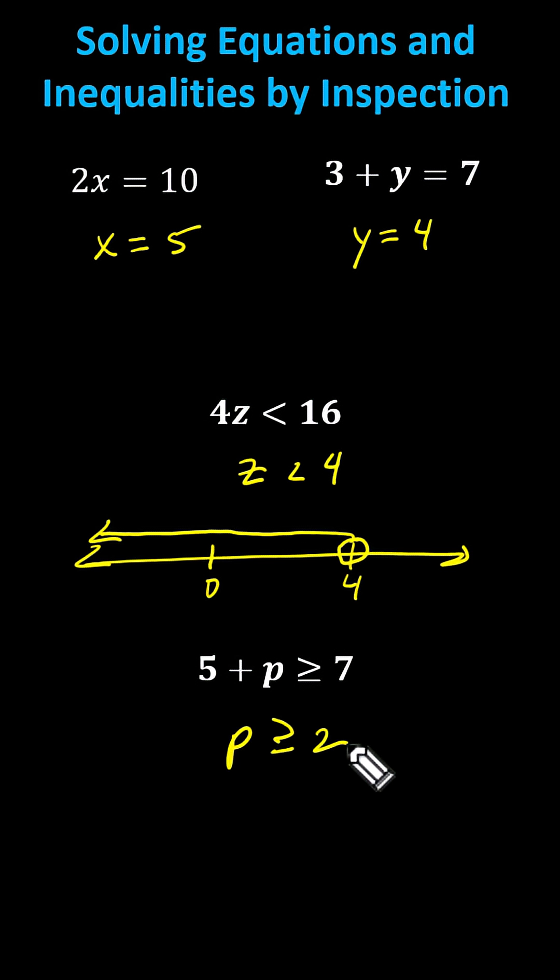And again, let's graph this interval on the number line. So 0 is here and 2 is here. Because 2 is in the interval because of the equal part, we make a closed point on 2, and then values get larger than 2 or greater than 2 to the right.